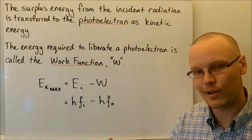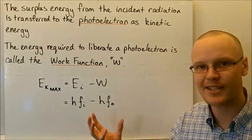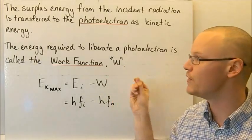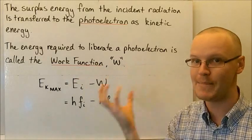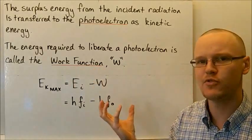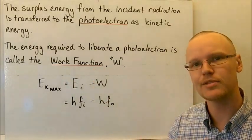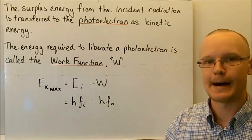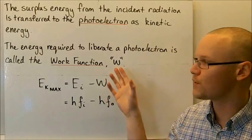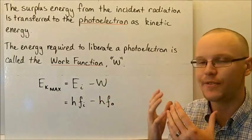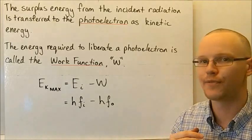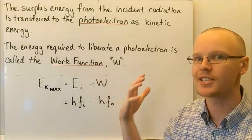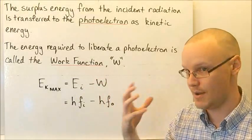Like a lot of things in physics, it's about context. The letter W in the context of the photoelectric effect refers to the work function of a metal. The work function is a property of that specific metal — so different metals like platinum, sodium, and magnesium all have different work functions, just as they have different densities, electronegativities, and other properties.